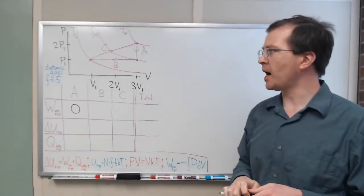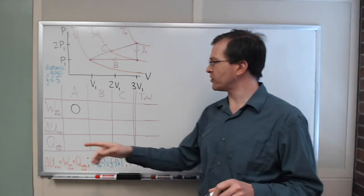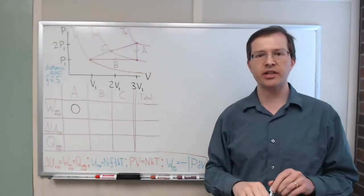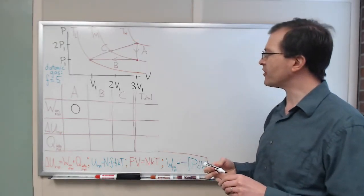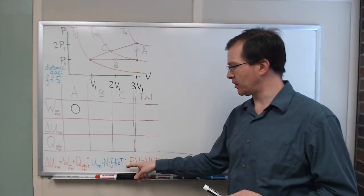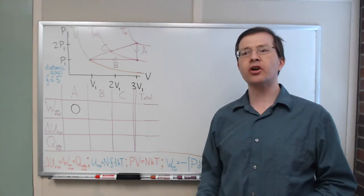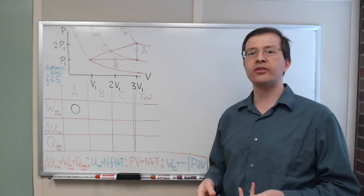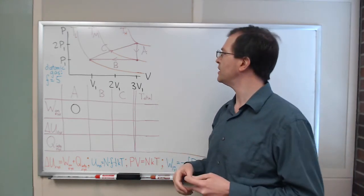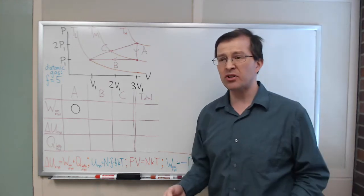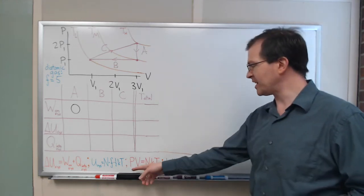Now, at the same time, in step A, we want to think about the change in energy of the system, the delta U for the system. And for that, the tool we're going to use is the equipartition theorem that relates energy to temperature. If the temperature goes up, then the stored energy goes up, and vice versa. How do we figure out the temperature? Well, for that, we're going to look at the ideal gas law.